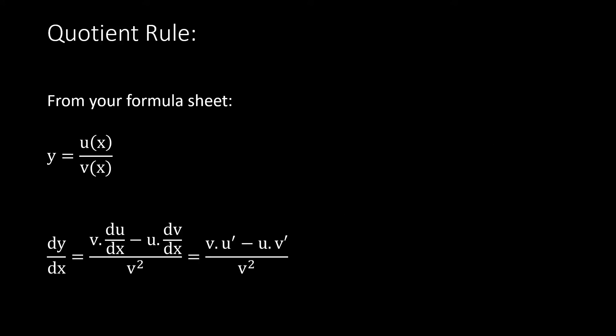On your formula sheet, under differentiation, you have Newton's theorem, then product rule, then quotient rule, and chain rule. Under the quotient rule: if y equals u over v — two different functions dividing — you should think quotient rule. Your answer will have v-squared at the bottom, and at the top: v times the derivative of u, minus u times the derivative of v.